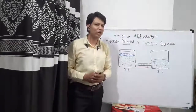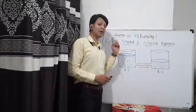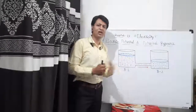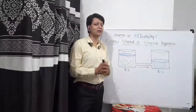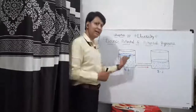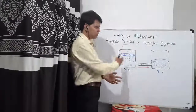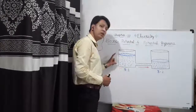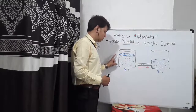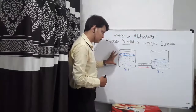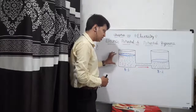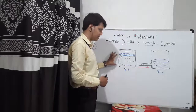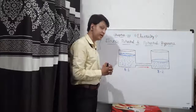Now we are going to study the topic called electric potential and potential difference. To understand in a very simple manner, I would like to give you one example in which there are two beakers, as you can see on the board. Beaker 1 is filled with water at a greater height, and in beaker number 2, the column of water is smaller — the height of the water is less.